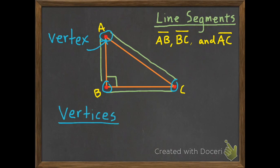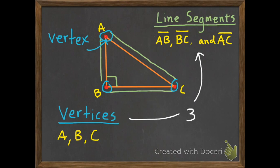When we have more than one vertex, we call them vertices. Our three vertices are A, B, and C. So just like a triangle has three angles, it also has three line segments and three vertices.